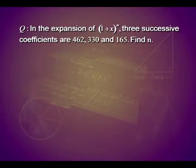The next problem says: in the expansion of 1 plus x to the power n, three successive coefficients are 462, 330, and 165. Find n. Three successive coefficients are the coefficients of three successive terms. You can assume those terms to be the r-th, (r+1)-th, and (r+2)-th terms, or equivalently the (r-1)-th, r-th, and (r+1)-th terms. You cannot assume them to be specific positions like 3rd, 4th, and 5th because we do not know anything about their position.